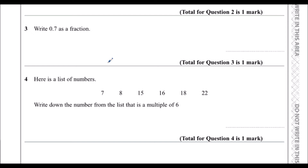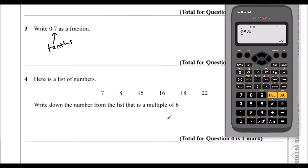Question 3: write 0.7 as a fraction. This is the tenths column, so we've got 7 tenths. The calculator can help us here — if we just type in 0.7, the calculator will automatically give us our answer as a fraction: 7 tenths.